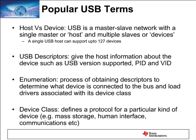Enumeration is a process of obtaining descriptors to determine which device is connected to the bus and the drivers associated with its device class. When the host enumerates a device, it figures out what device class it needs to use to communicate with it. A device class is a protocol assigned to a particular kind of device — we're familiar with terms such as mass storage, human interface, or CDC device class.